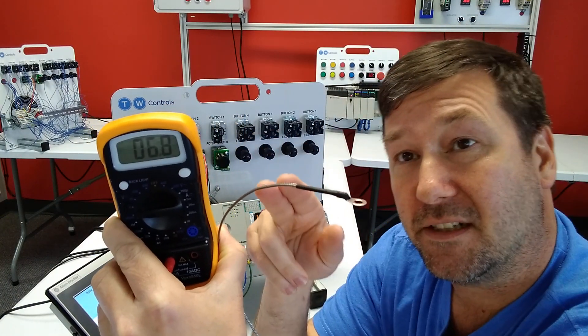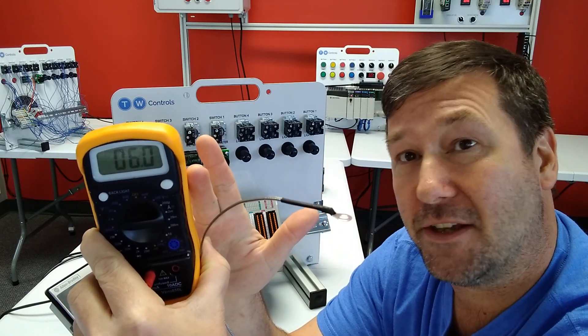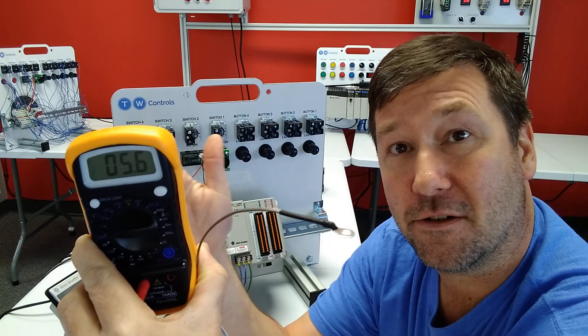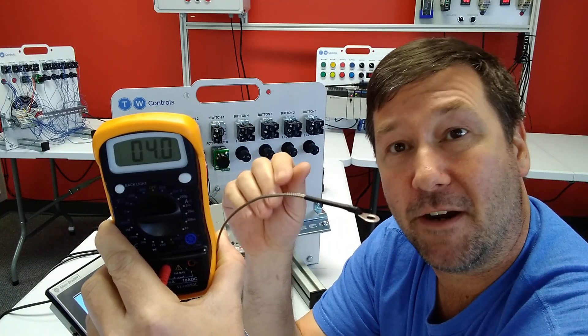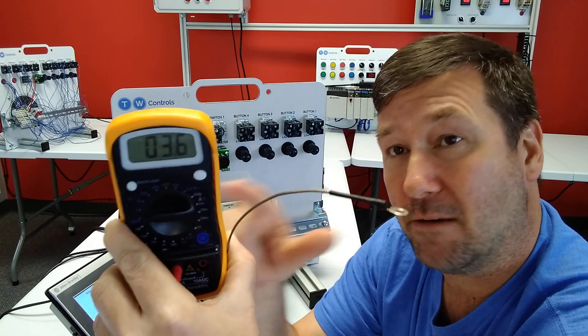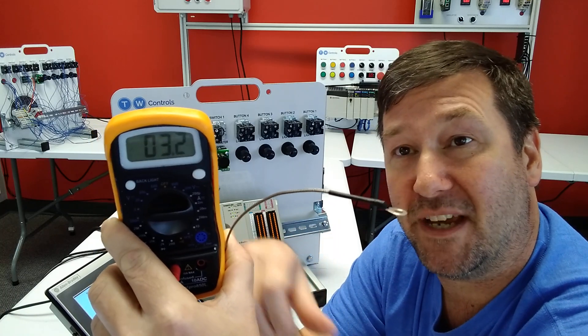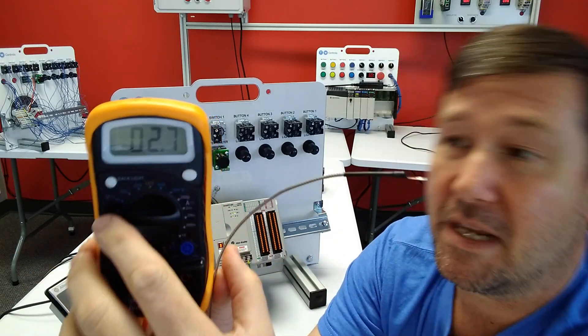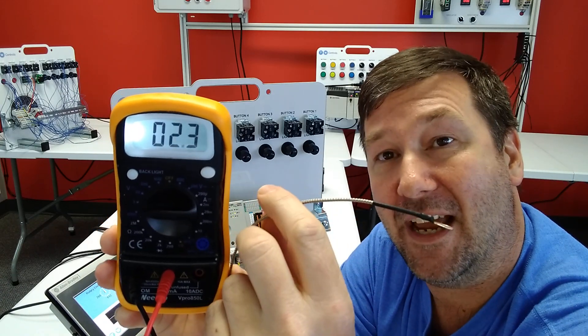So this millivolt signal is very repeatable, and you can take this value and determine your temperature. So that's how a thermocouple input works—it's really a very sensitive millivolt input, and it reads the millivolt input and determines what the temperature is based off of that. And you can see on our meter now that we're sitting here without our heat, it's slowly coming back down.